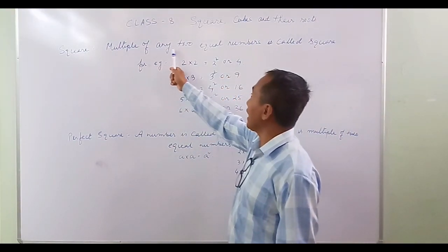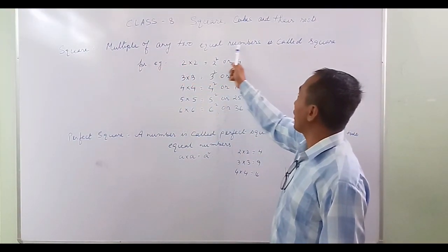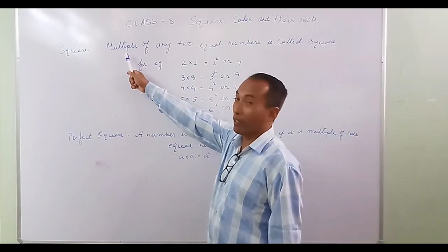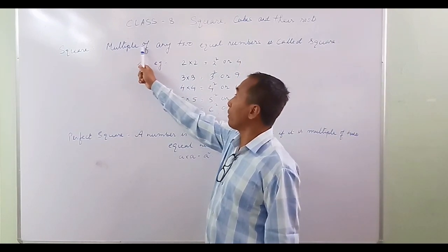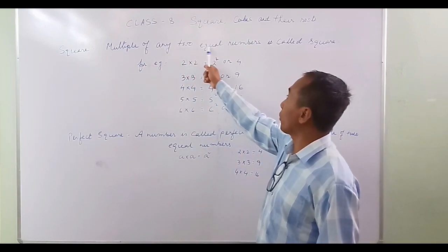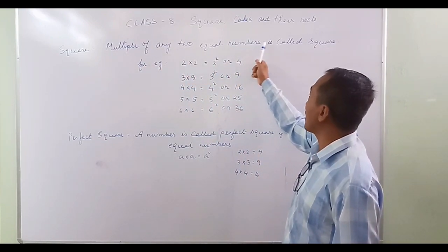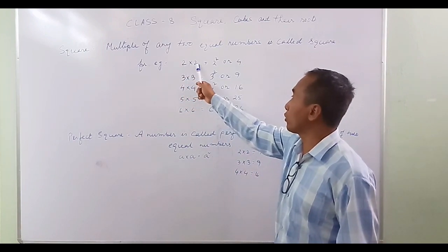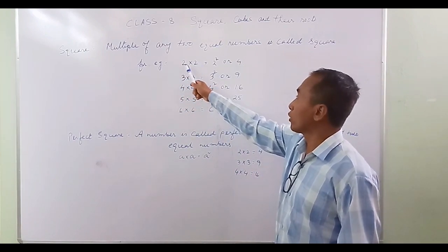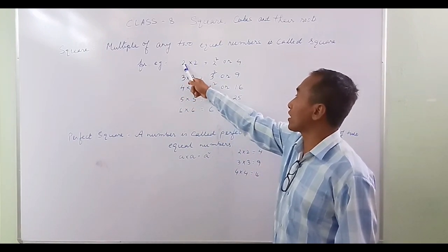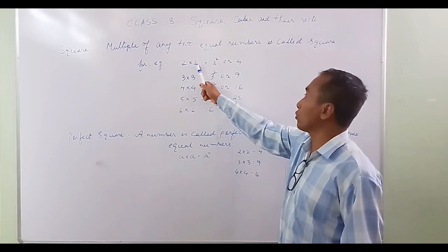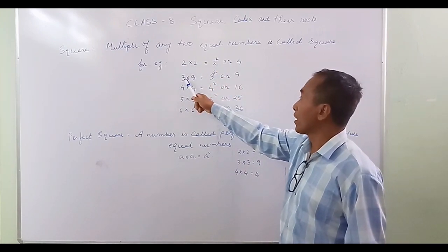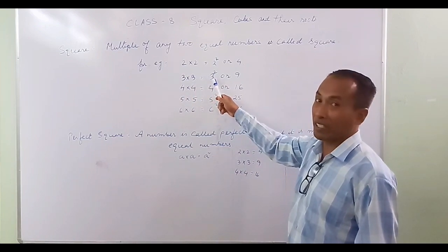The multiple of any two equal numbers is called a square. For example, 2 into 2 — here 2 and 2 are equal numbers. 2 into 2 we can express as 2 square, or 4. 3 into 3 we can express as 3 square, or 9.